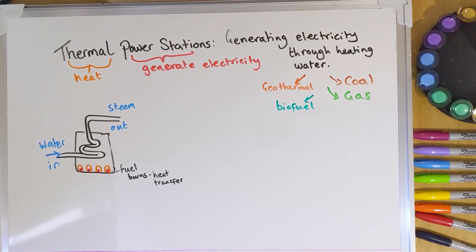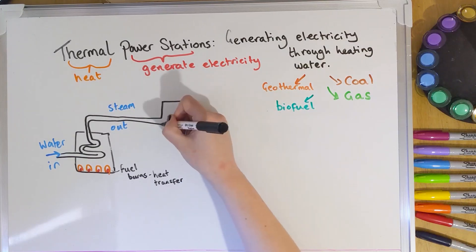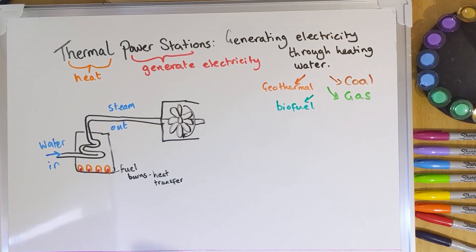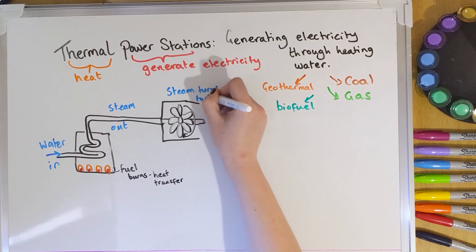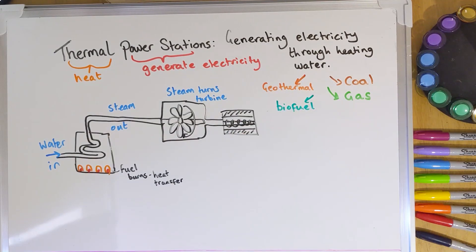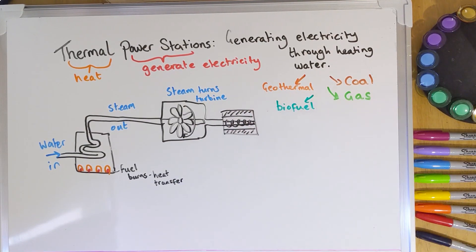The next stop for this steam is into a very large turbine — just like a very large fan. It spins rapidly as the steam is forced through, like blowing a pinwheel windmill. The steam is mechanically transferring energy into the kinetic store inside the turbine. That spinning turbine then spins a core of metal inside a magnet, which generates electricity, transferring energy from the kinetic store into an electrical transfer.